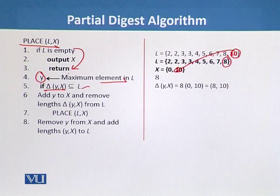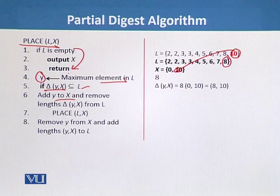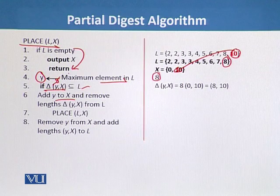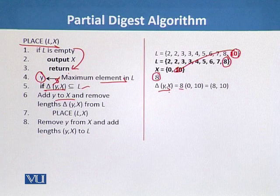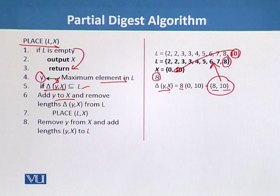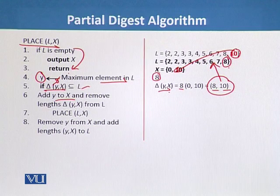If delta(Y, X) is a subset of L, then we will add Y to X. We calculate delta(Y, X) with Y equal to 8, the largest element remaining in L. So we calculate the distances between 8 and each element in X: {8, 10}. But 8 is present in L while 10 is not, so {8, 10} is not a subset of L. We move to the next part of the algorithm.